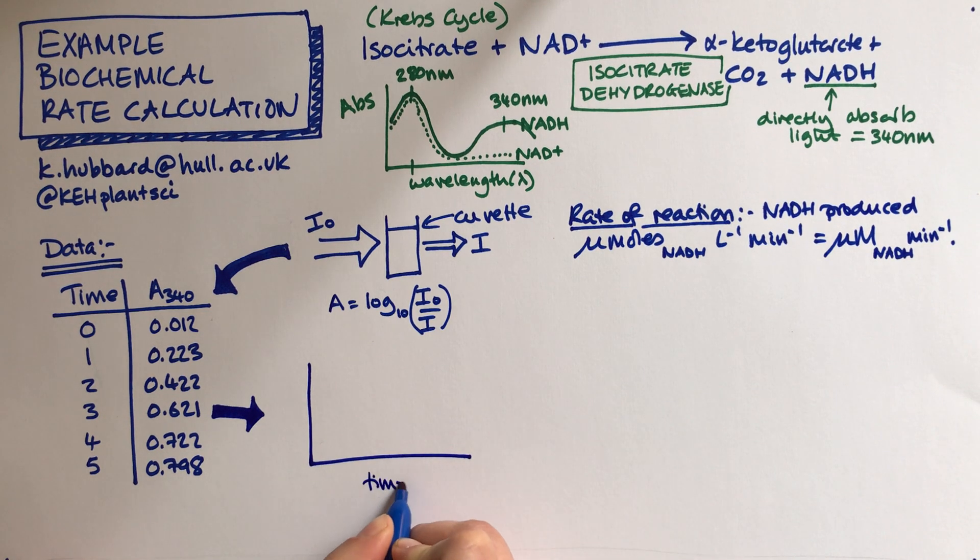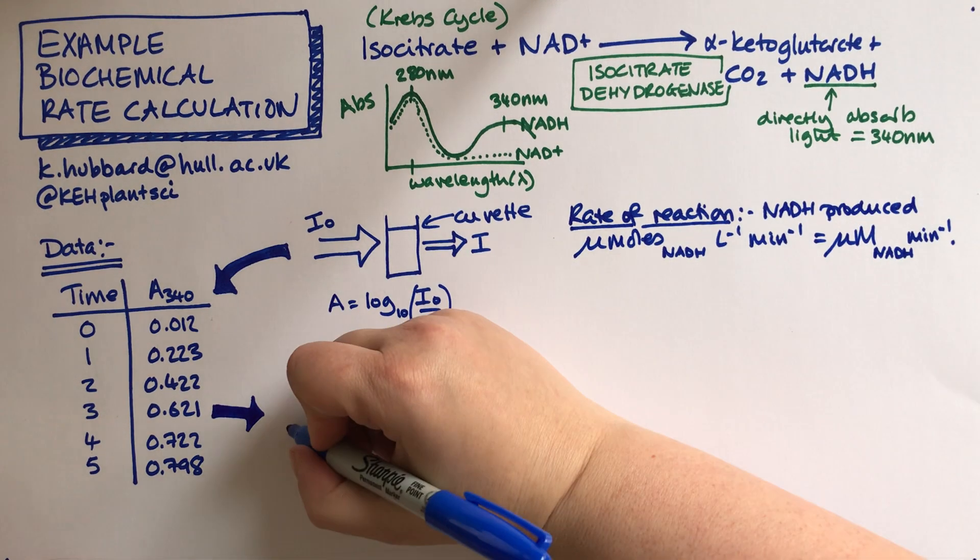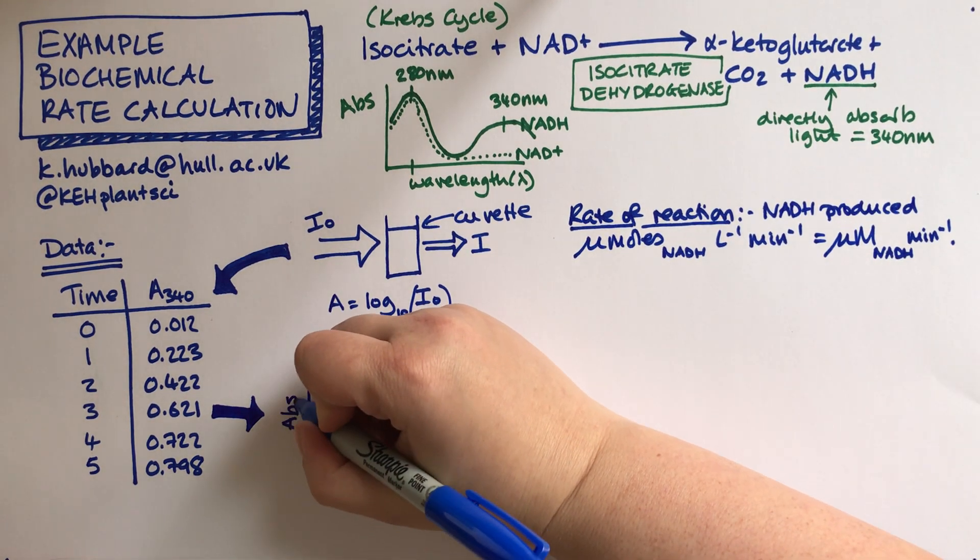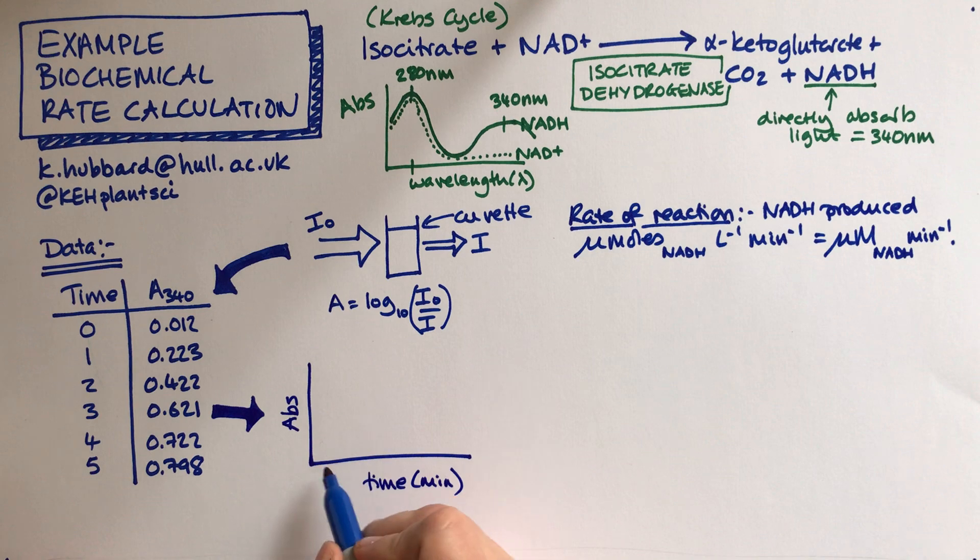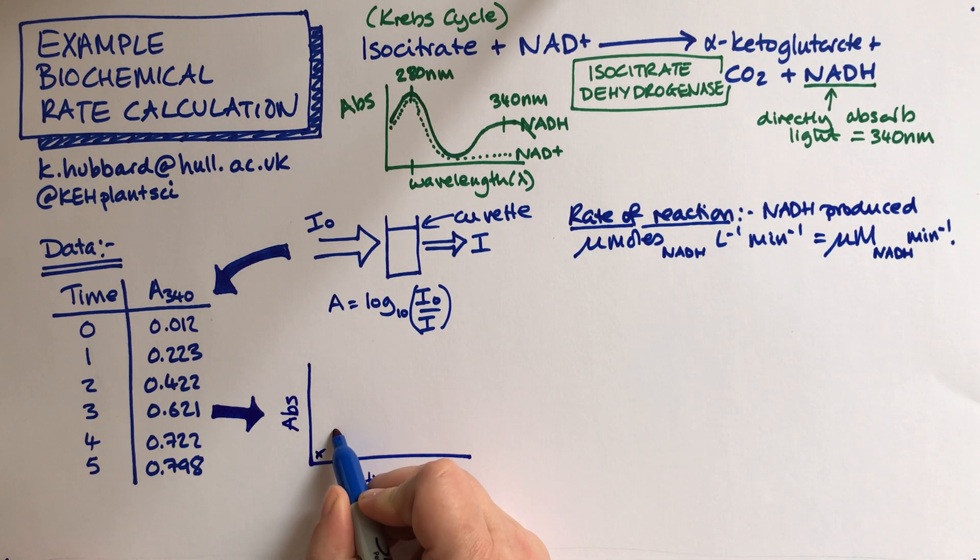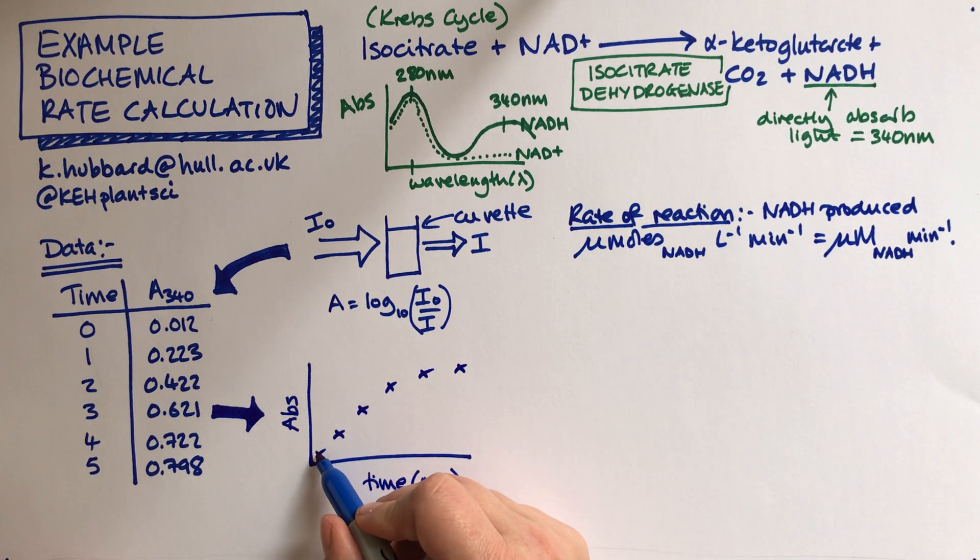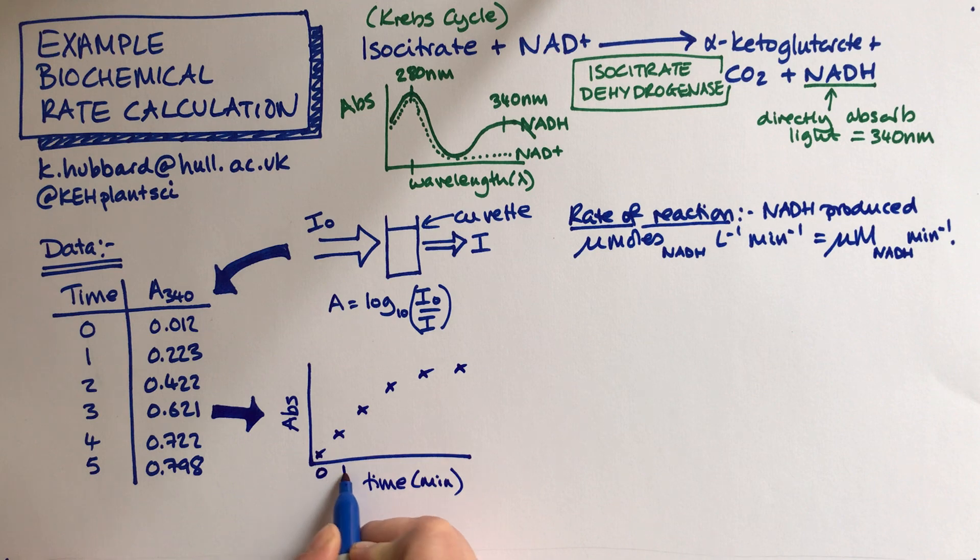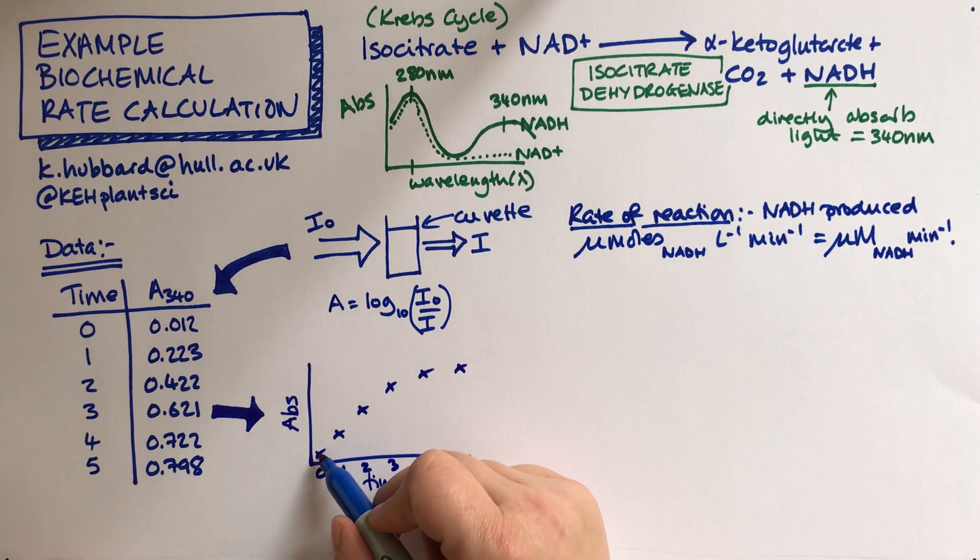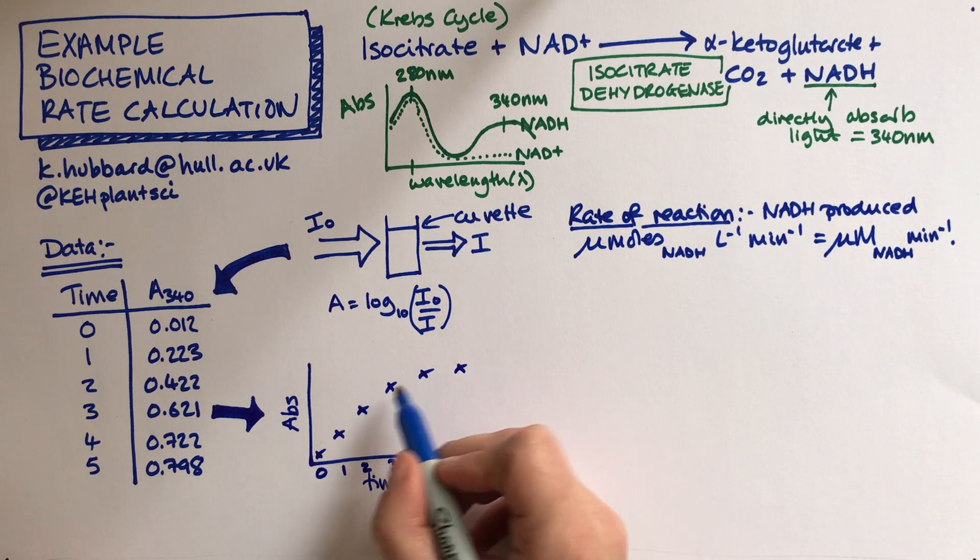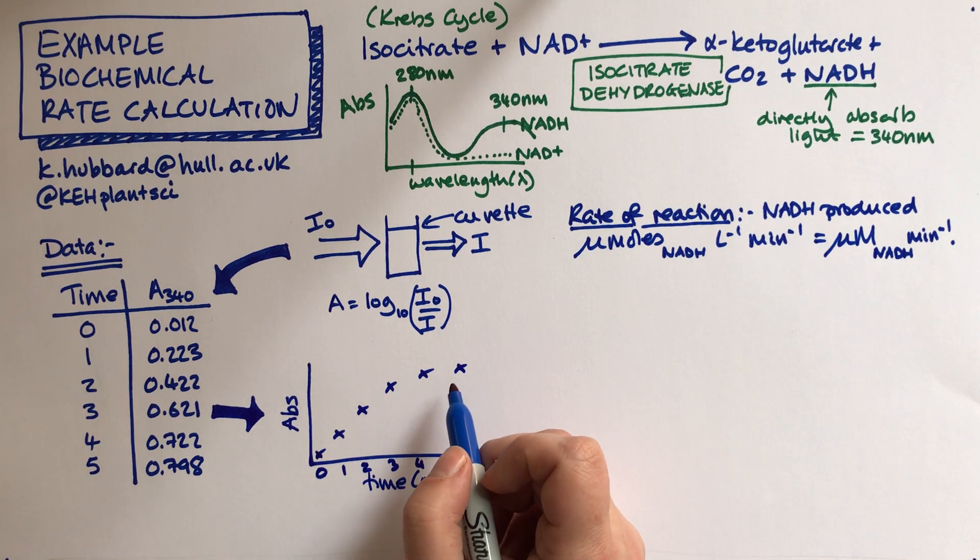If I draw that graph out, obviously you do this properly using Excel or whatever, what I find is it's got that sort of a shape. This is one two three four five minutes. So the first bit of the graph is mostly a straight line but then it sort of starts to taper off there.